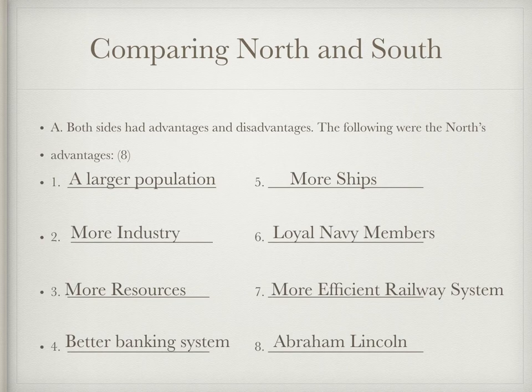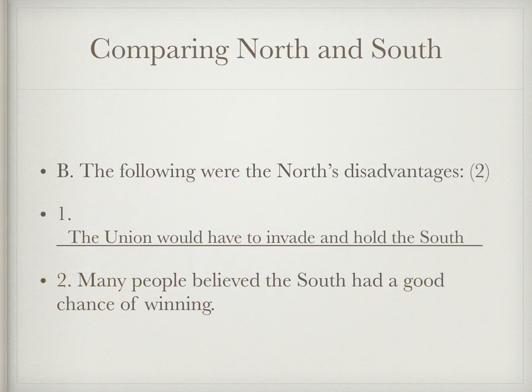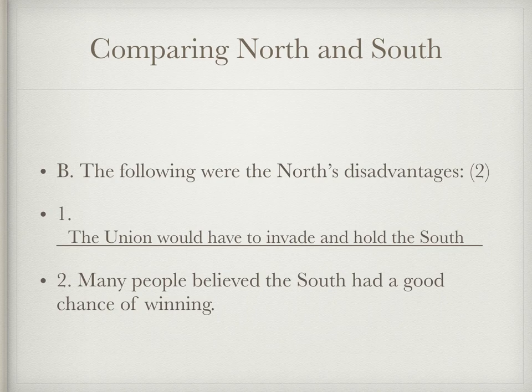Even though the North was the favorite on paper, they had some disadvantages. One: the aggression would have to come from them — the Union would have to invade and hold the South. Another disadvantage was that many people believed the South actually had a good chance of winning, even though on paper they were considered the underdog.